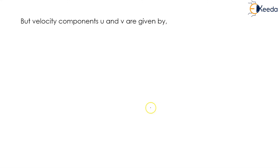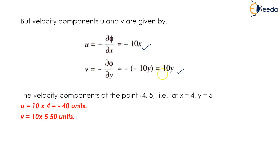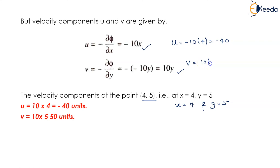The velocity components u and v are: u = -∂φ/∂x = -10x, and v = -∂φ/∂y = -(-10y) = 10y. At point (4, 5), substituting x = 4 and y = 5: u = -10 × 4 = -40 units, and v = 10 × 5 = 50 units. The velocity components u and v are -40 and 50 units respectively.